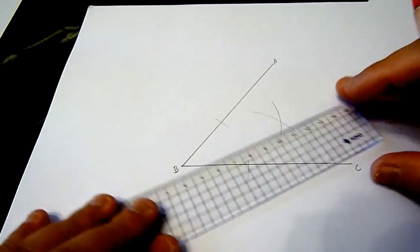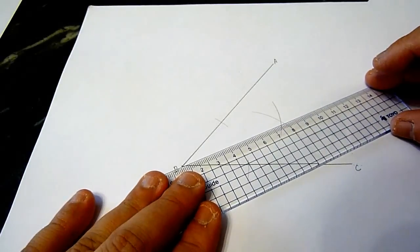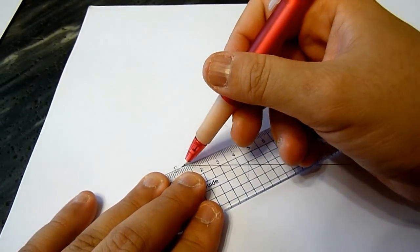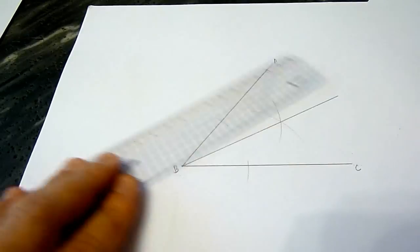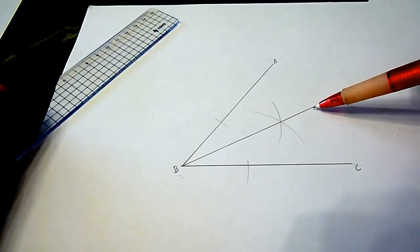Now, join the tip of the angle to the intersection point of the arcs. This will be the angle bisector.